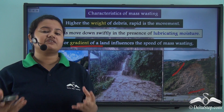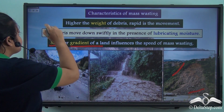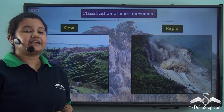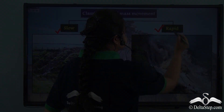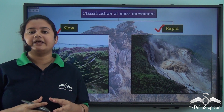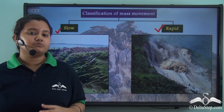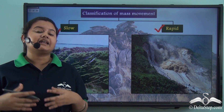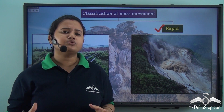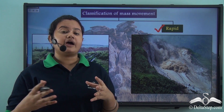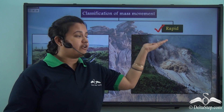Mass wasting is of several types. Mass movement or mass wasting is primarily of two types: slow and rapid. The gradual movement of mud and clay particles represented slow mass wasting, whereas huge chunks of rock debris rapidly moving down the hill represented rapid mass movement.